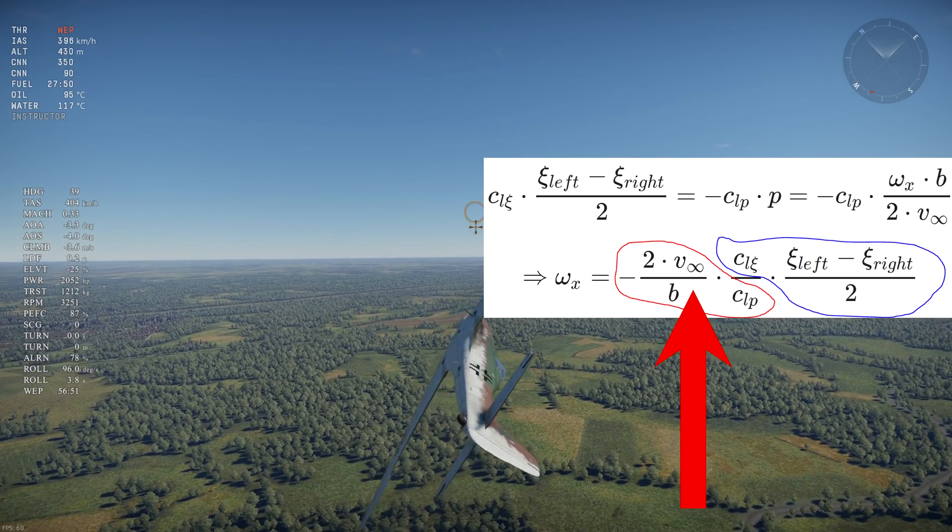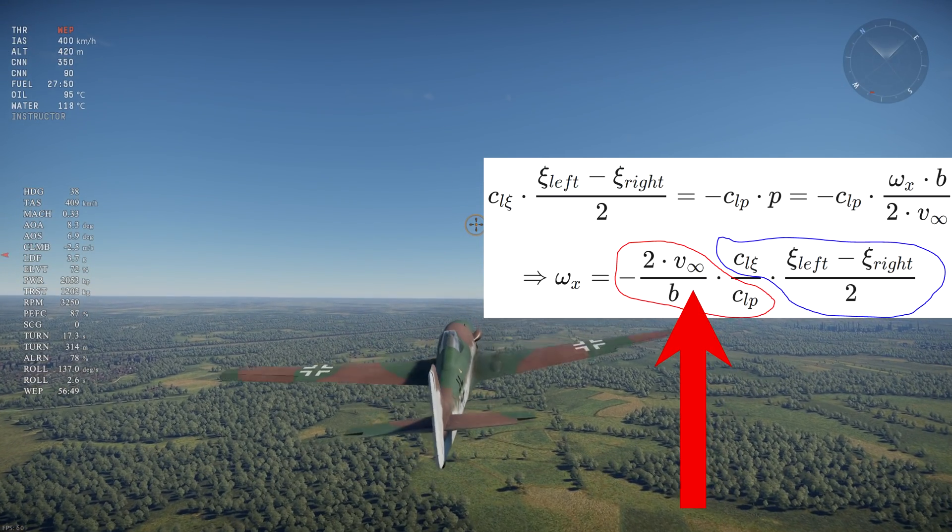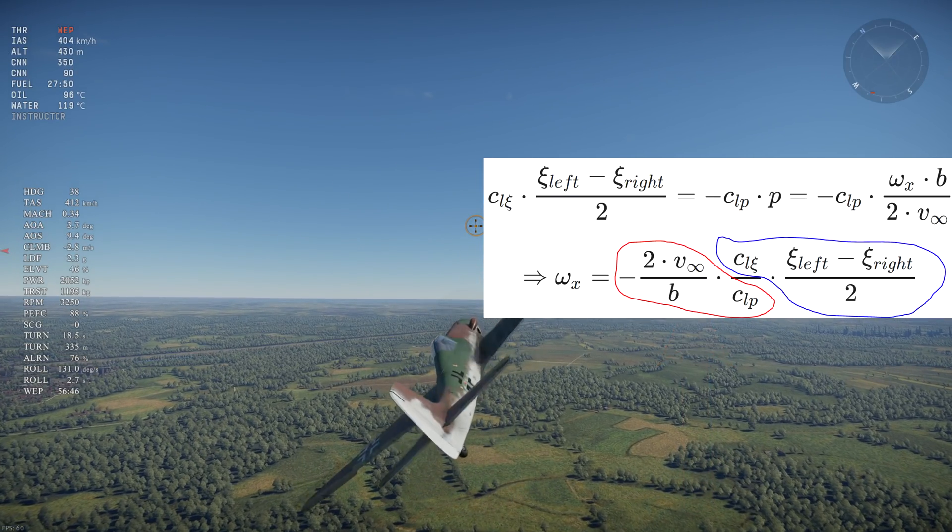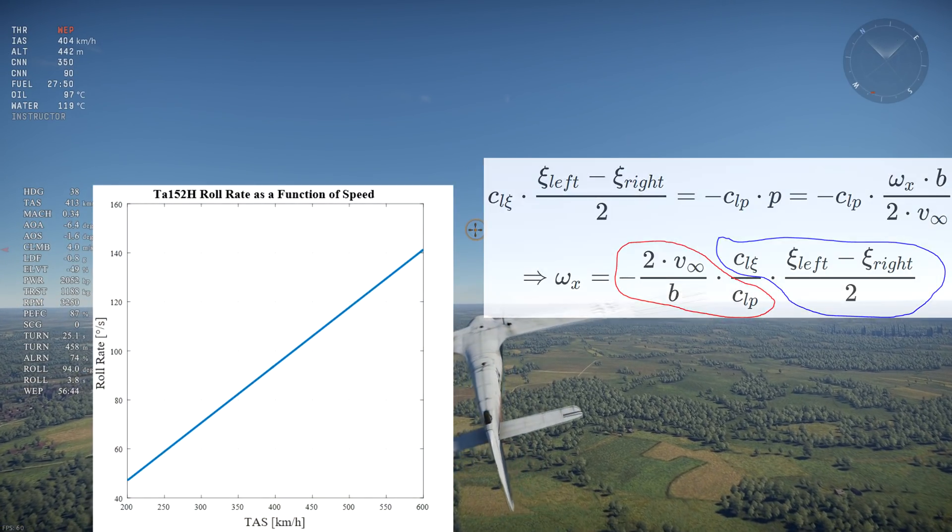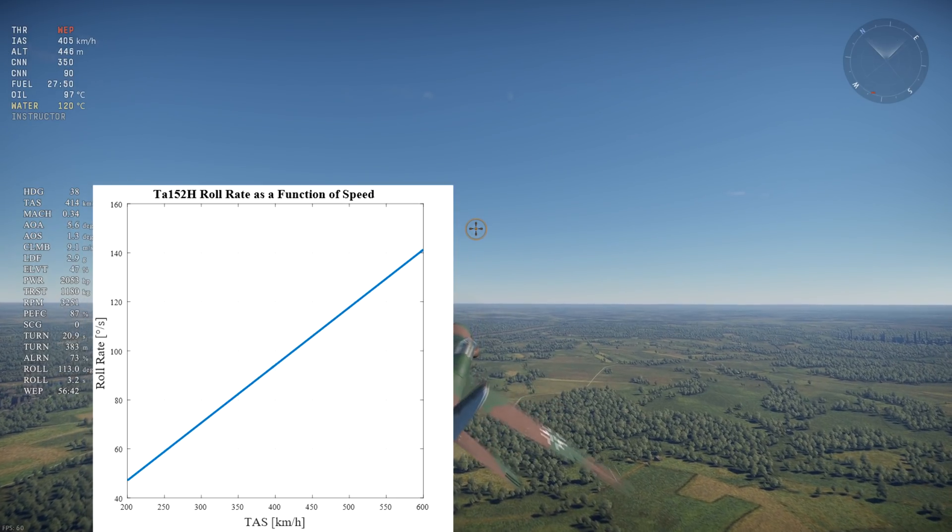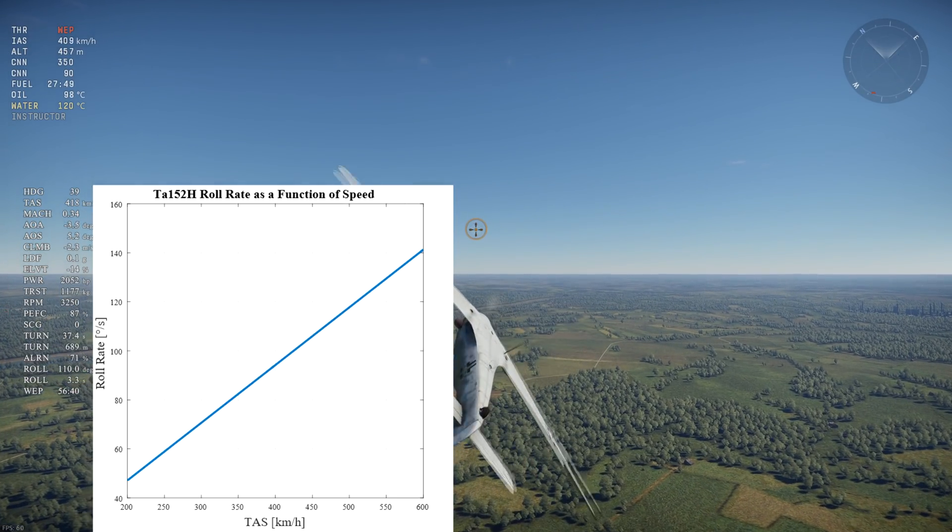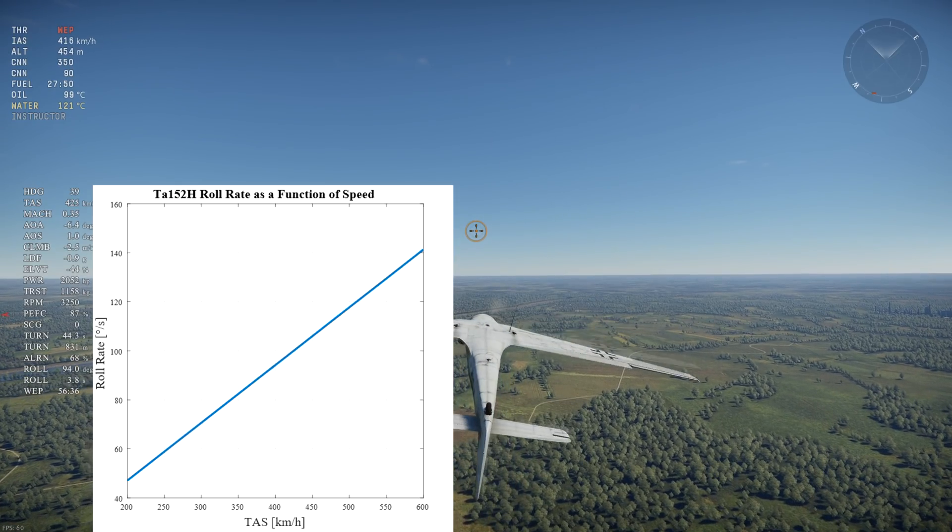Already we see that speed is in the numerator, so we should expect roll rate to increase as speed increases. Theoretically, as you can see on this Typhoon roll rate as a function of speed graph, roll rate should increase linearly with speed.